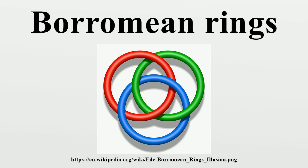Linking in knot theory: the Borromean rings are a simple example of a Brunnian link. Although each pair of rings is unlinked, the whole link cannot be unlinked. There are a number of ways of seeing this. The simplest is that the fundamental group of the complement of two unlinked circles is the free group on two generators, R and B, by the Seifert–Van Kampen theorem. And then the third loop has the class of the commutator,